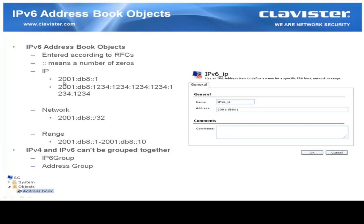So for example, the following IP — 2001:DB8::1 — means that after the first bit of the address we have a lot of zeros and then it finally ends with the number one. This is a full IPv6 address, which is much longer than an IPv4 address. We can also type in network addresses; for example, the first 32 bits determine the network. We can also create ranges, such as from the .1 address to the .10 address. Importantly, in Core Plus we cannot group IPv4 and IPv6 addresses together. Therefore we have a special group called IPv6 Group where we can group together IPv6 IP addresses, ranges, and networks.